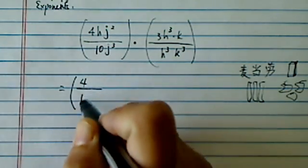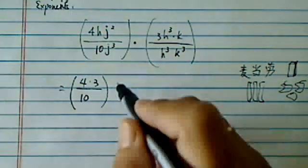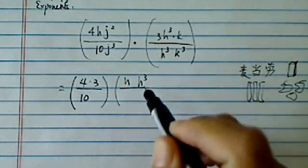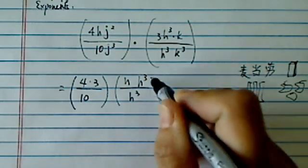Let's put all the numbers. We'll have four and ten, and we'll have a three. And then I have H on top here, and then H to the third, and then H to the third on the bottom here.